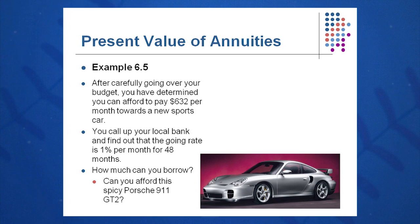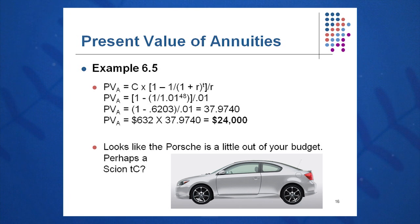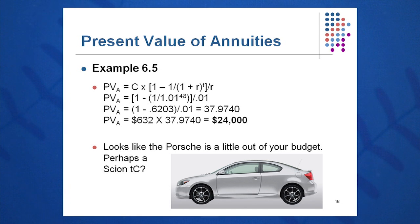Let's plug it in and see what we can borrow today, which is the present value annuity formula. If I pay a constant $632 per month: PVA equals C times [1 minus 1 over (1 plus R) to the T], all over R. I plug in C = $632, rate = 0.01 (the monthly interest rate), T = 48 months, and divide by 0.01. I get a present value annuity of $24,000 — not exactly going to buy me a brand new Porsche or Mercedes-Benz. The problem is this is a very high interest rate at more than 12% per annum. At a much lower rate, we would be able to buy that Porsche or BMW for $632 a month.